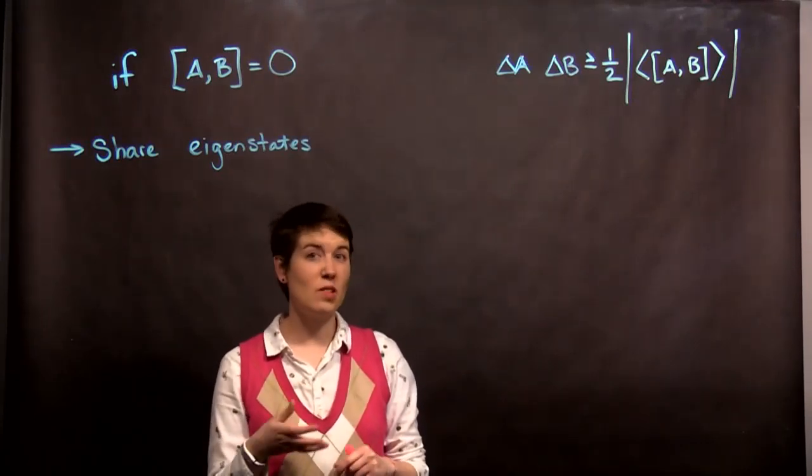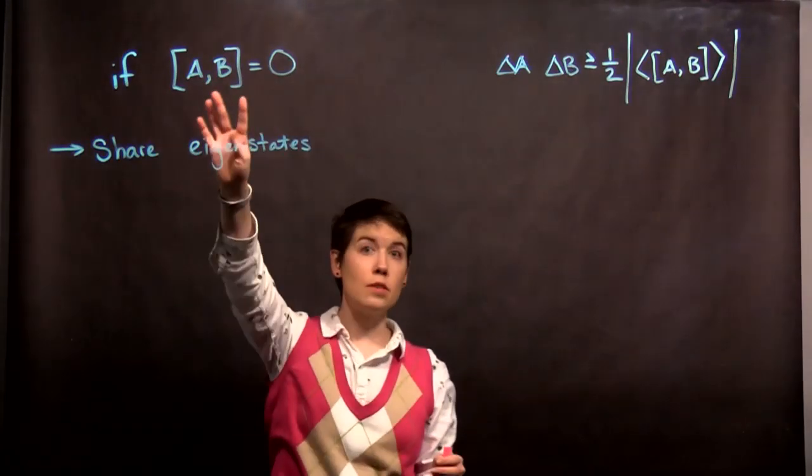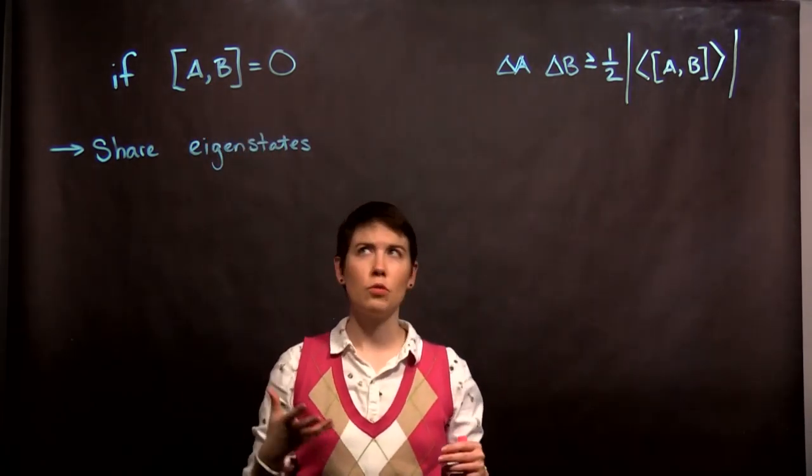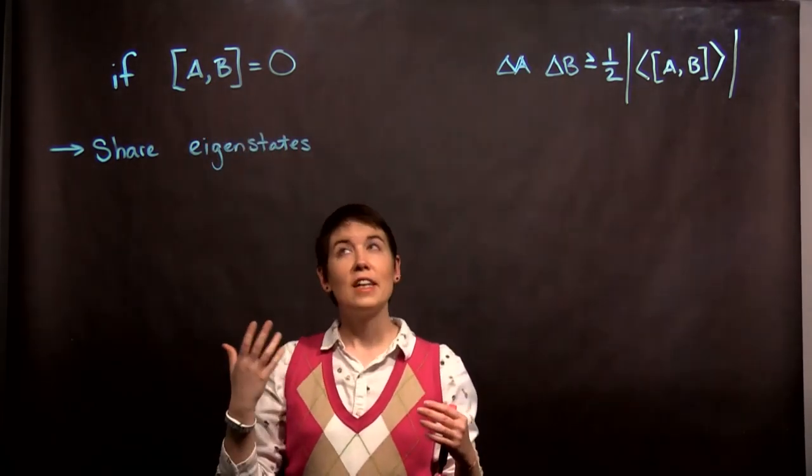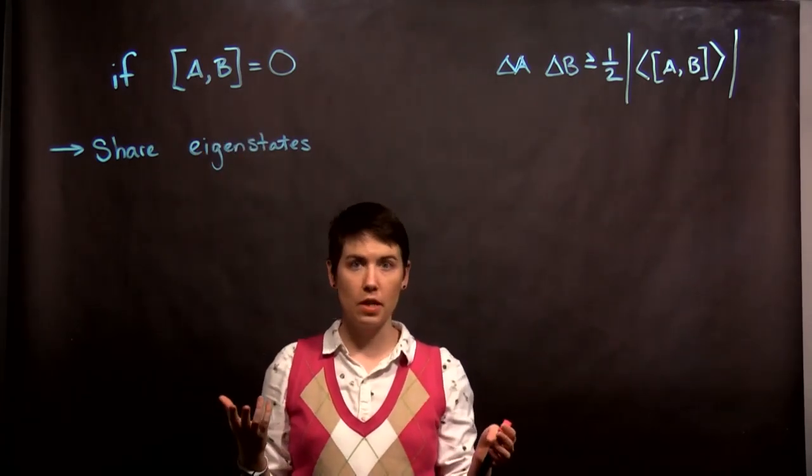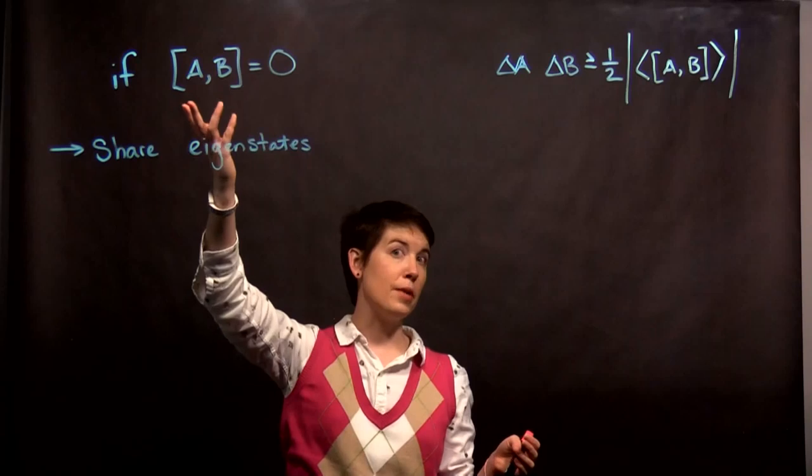In a separate video, I discussed how we can calculate this object, the commutation relationship between two observables or two operators. And the idea is that when we calculate this, it doesn't actually need a specific state.